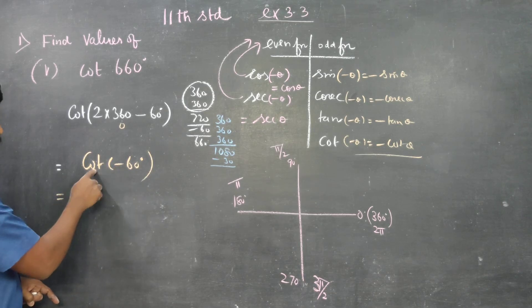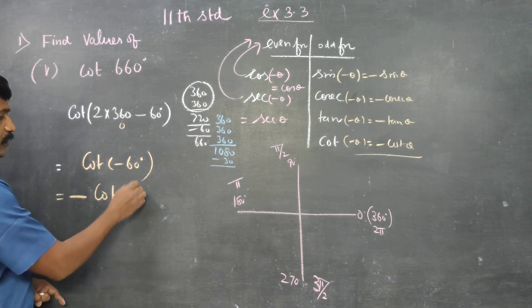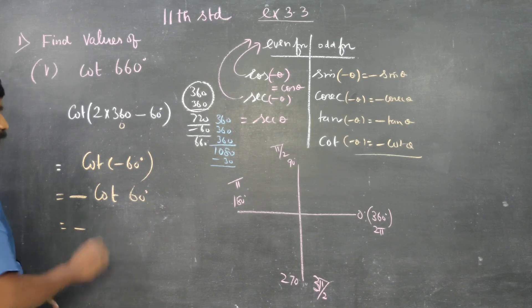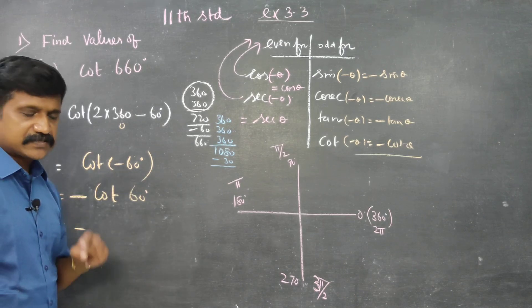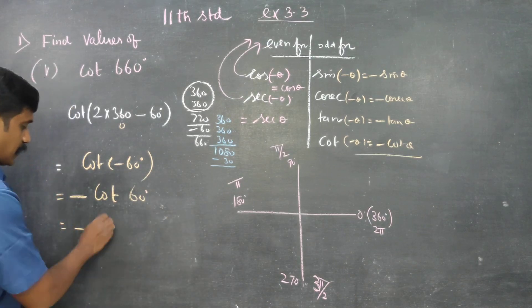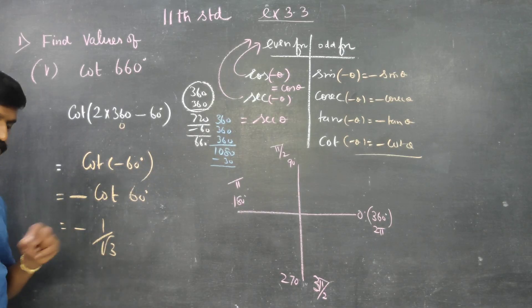Because this is an odd function, cot of minus 60 equals minus cot of 60. Cot of 60, cot is reciprocal, one by root 3. Cot 60 is one by root 3, that is the answer.